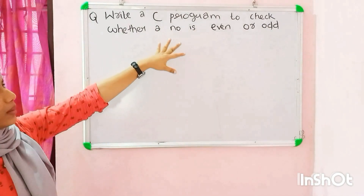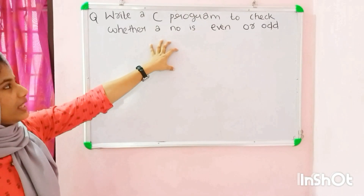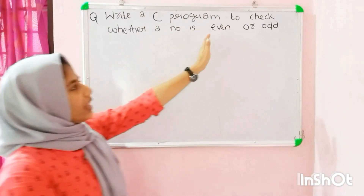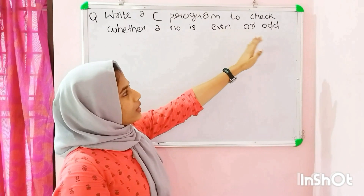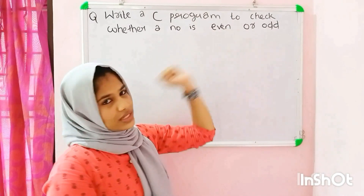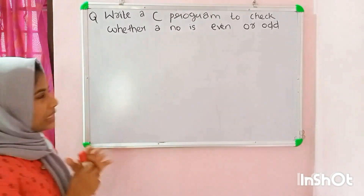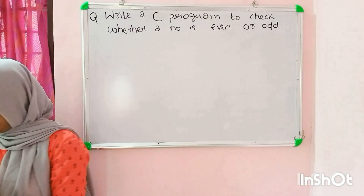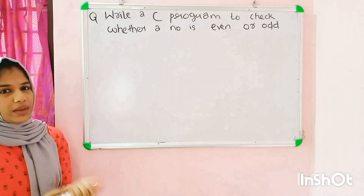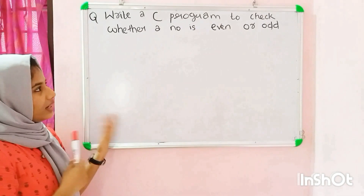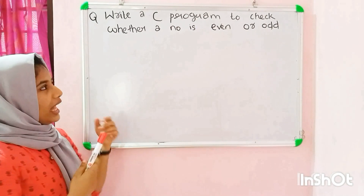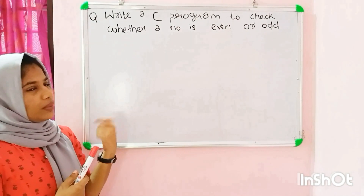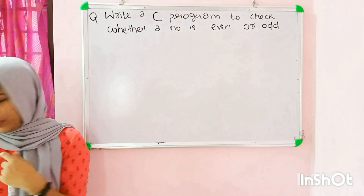Question 1 is, we have to check the number — that is, odd or even. We are doing the C program to check how odd and even numbers work.